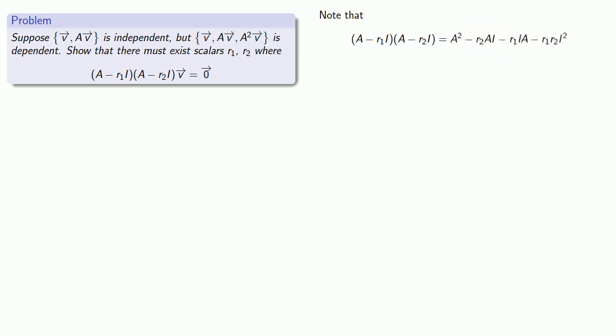Now because we're dealing with matrices, there are certain things we can do, and certain things we can't do. So here we have to have this product AI, which we get from multiplying this A by this r2I. And we also have this product r1IA, which we get from multiplying this r1I by this A.